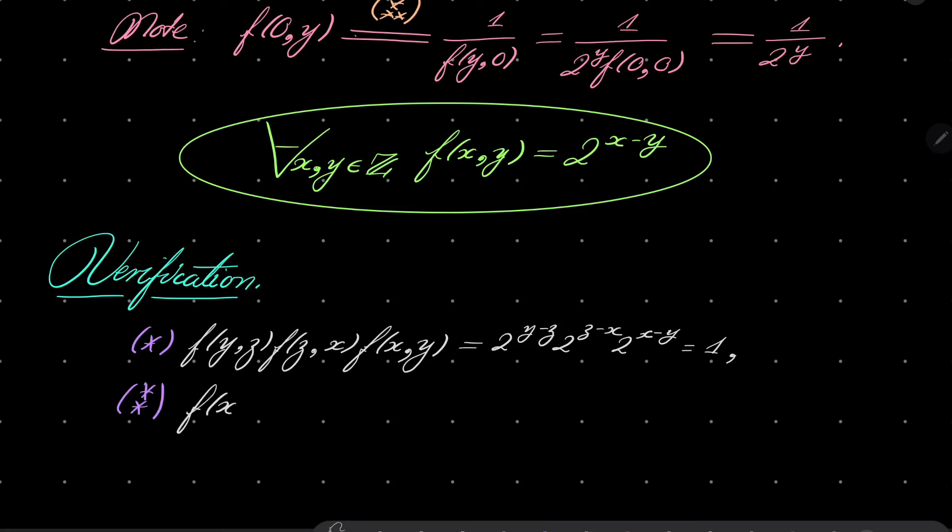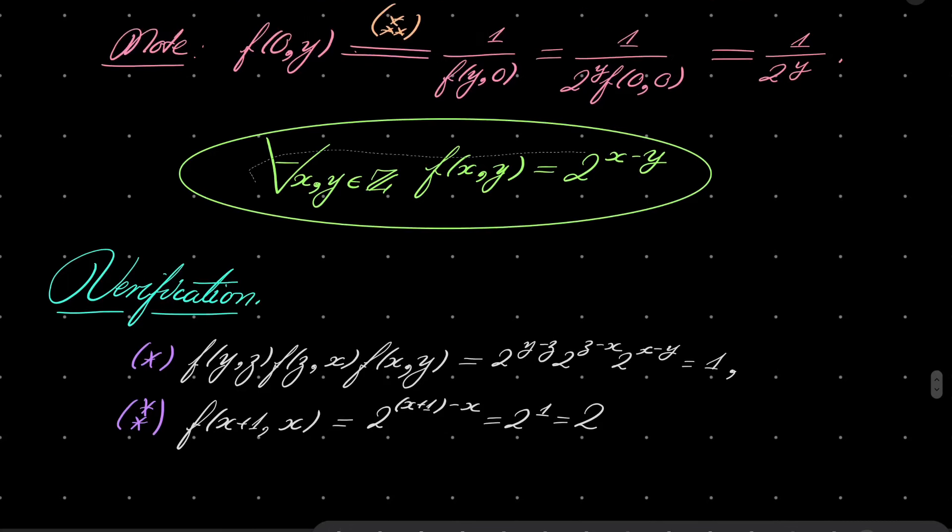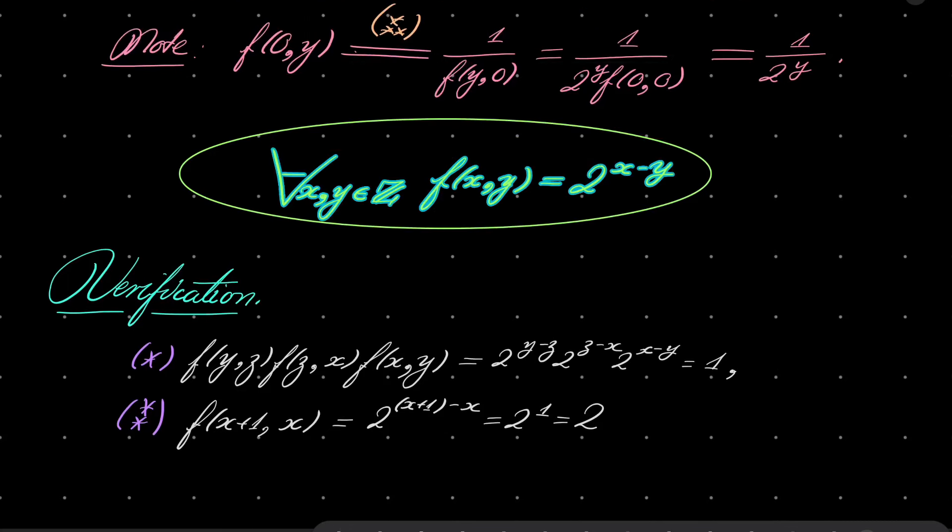And let's verify the second equation. f(x+1,x). It's 2 to the power of x plus 1 minus x. It's 2 to the first power. It's 2. So both equations are verified and we have our solution set. We have exactly one function satisfied our equation. And that function is f(x,y) equals 2 to the power of x minus y. And that closes our problem.